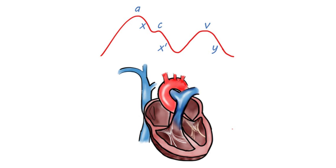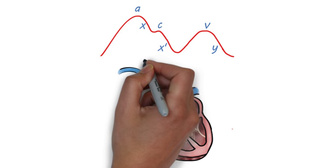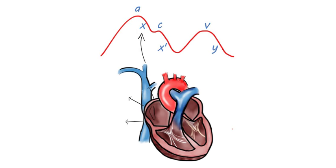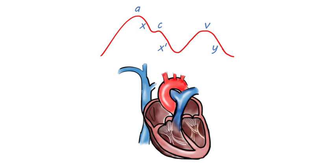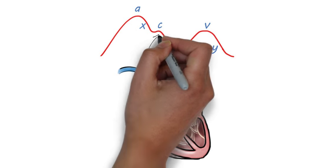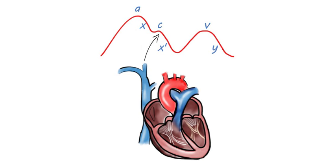As the atria relaxes, the pressure drops and is reflected by the X' descent. Right before the rise of the C wave, the tricuspid valve closes as ventricular systole occurs. The small notch, or C wave, represents ventricular contraction. As the ventricle contracts, it pushes your tricuspid valve into the right atria, increasing the pressure ever so slightly to give you a small peak.